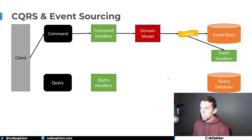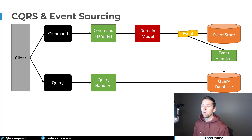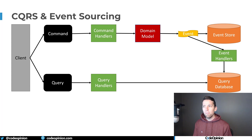Our event handlers update what our query database is, basically creating projections. Now that we have this query database with these projections, on the client side when we go down the query path, we have query handlers that aren't interacting with our event store but rather with our projections — our read database, our query database. These projections can be very use-case specific; you could have for every different type of query a specific view or shape of that data across all those events into current state.